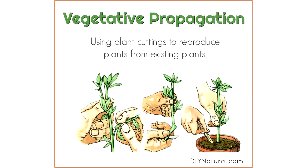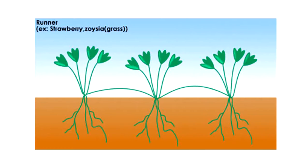Plants can also undergo a form of asexual reproduction known as vegetative propagation. It produces new plants from either leaves, roots, or stems. Many plants reproduce this way by producing runners — plant stems that lie along or under the ground and sprout up as new plants. Strawberry plants, as you can see here, are an example that reproduces using runners.